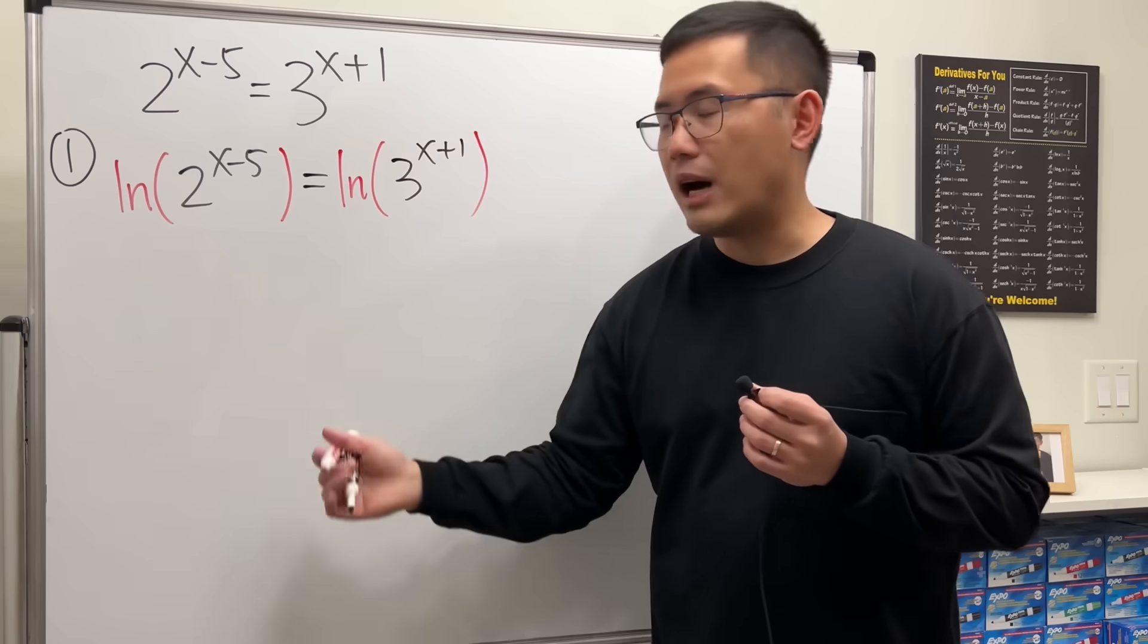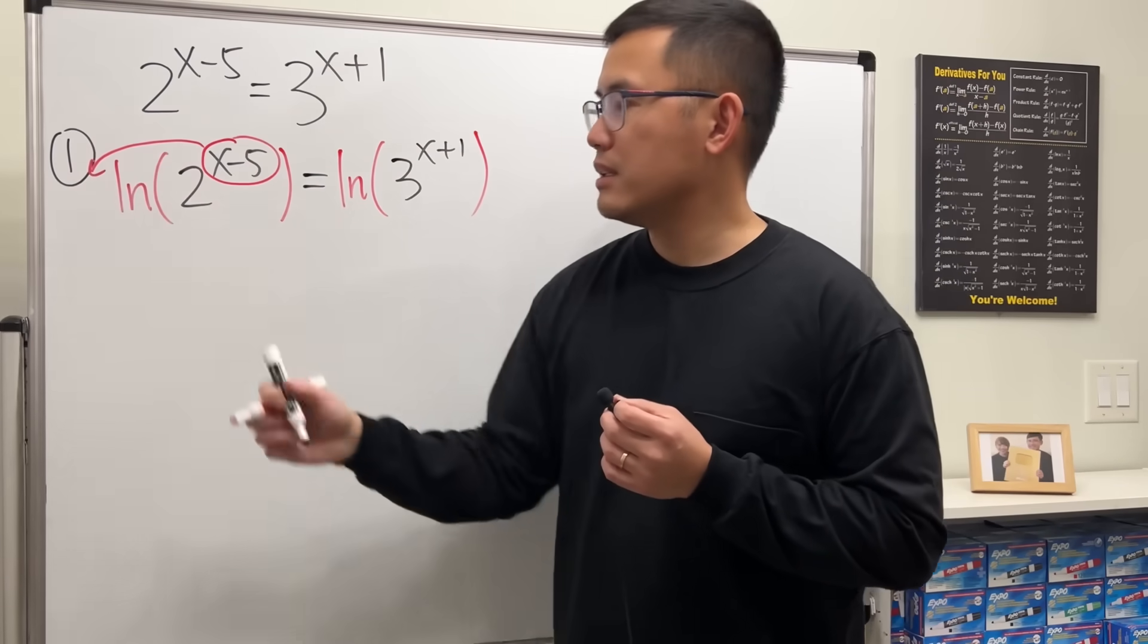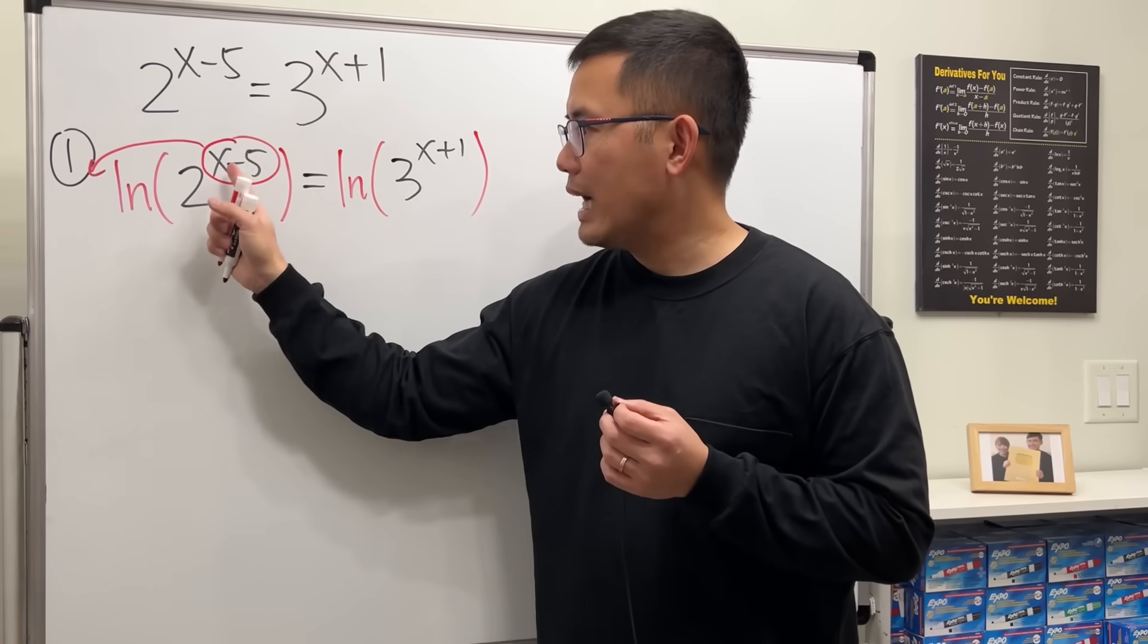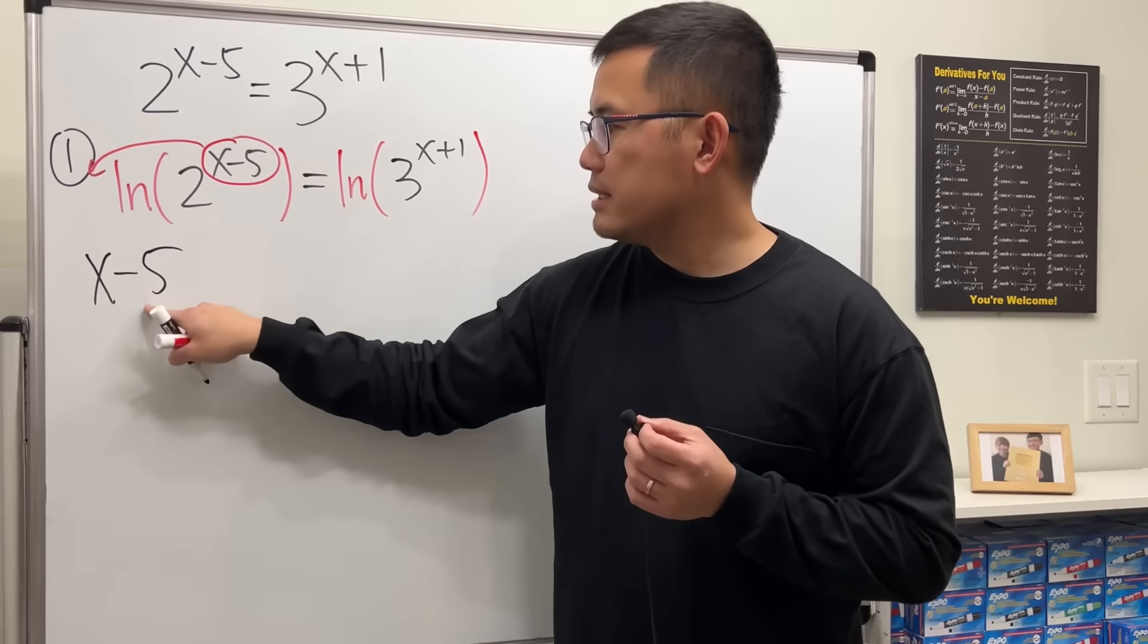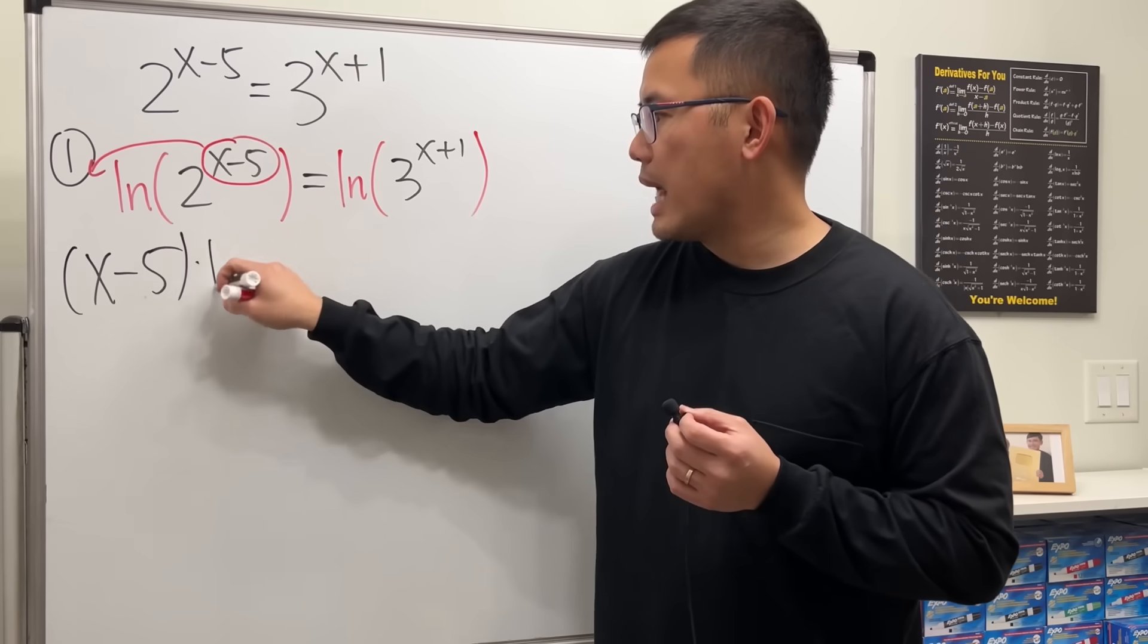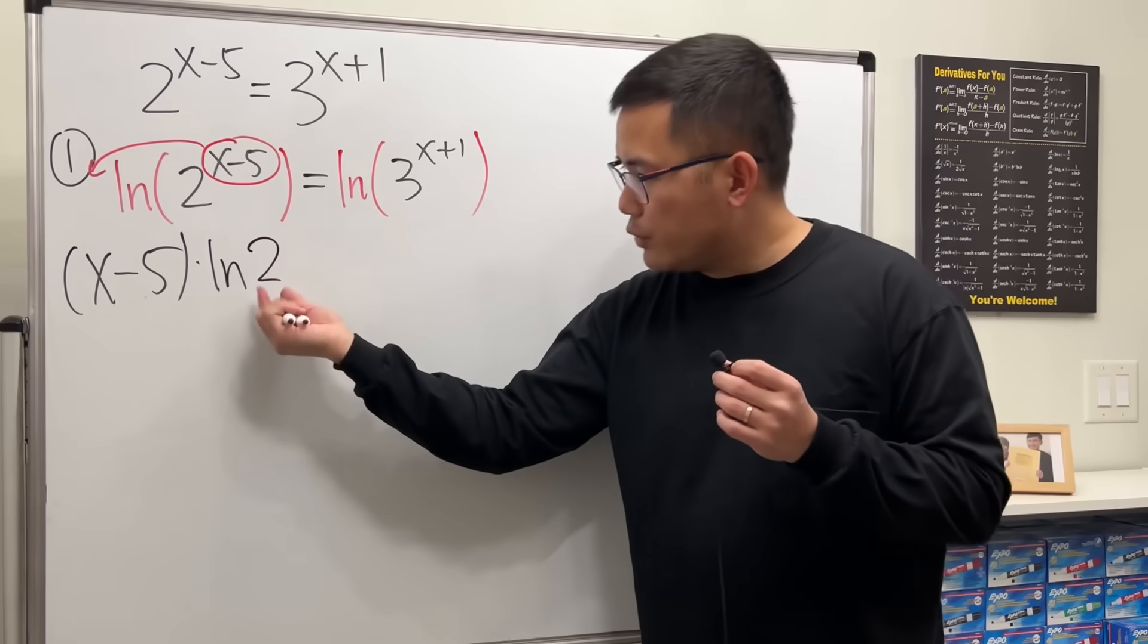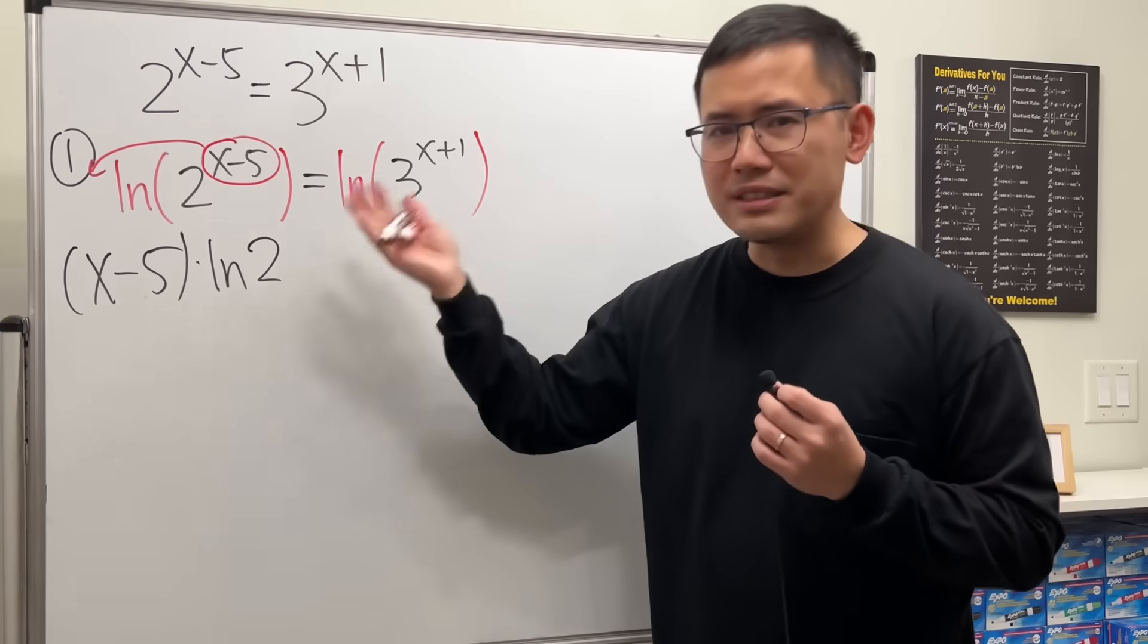Once we have this now, we can just take the exponent to the front by one of the ln properties. So for the left-hand side, we will have x minus 5 in the front. And because this has two terms, make sure you put down parentheses around it, and then times ln 2. And one thing to note is that if you only have one thing inside of the natural log, you don't really have to put down the parentheses. This is okay.